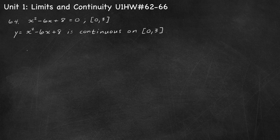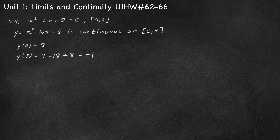Let's consider our y-coordinates at our endpoints: y of 0 and y of 3. At 0, the function gives 0 squared minus 6 times 0 plus 8, which is 8. At 3, we get 3 squared minus 6 times 3 plus 8: that's 9 minus 18 plus 8, which is negative 1. Is the y-coordinate 0 in between 8 and negative 1? Yes. This time the left endpoint is higher than 0 and the right endpoint is lower than 0, but 0 is still in between y of 3 and y of 0.